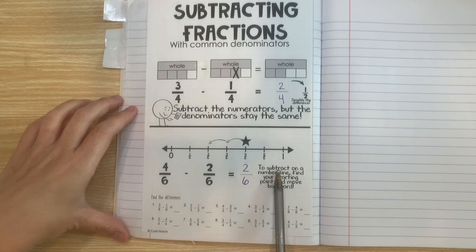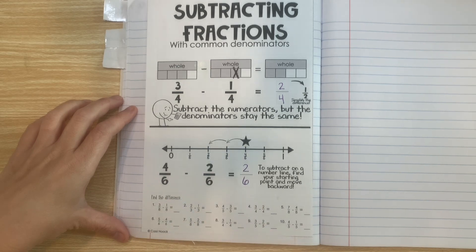It says to subtract on a number line find your starting point and move backwards and that's exactly what we did.